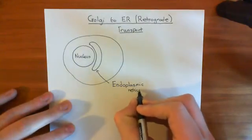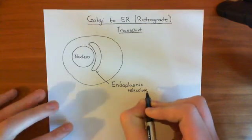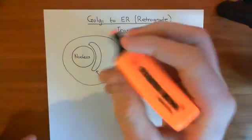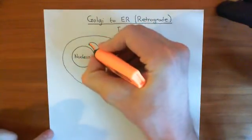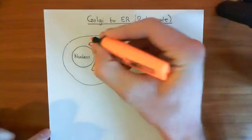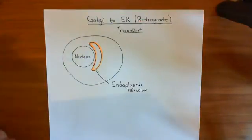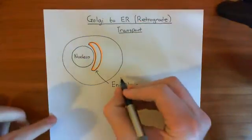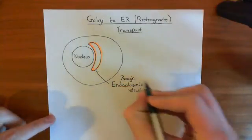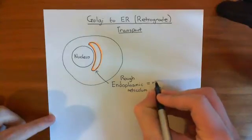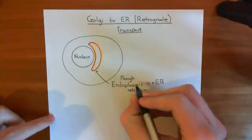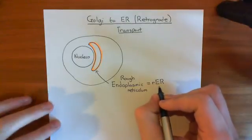Specifically, we're talking about the rough endoplasmic reticulum, which is the one to do with protein metabolism and protein building. This is the rough endoplasmic reticulum — abbreviated as RER, where the R denotes rough and ER denotes endoplasmic reticulum.